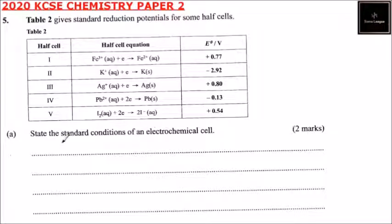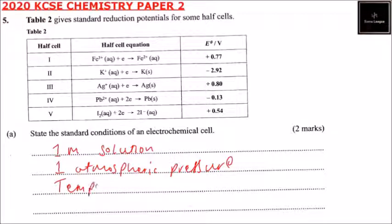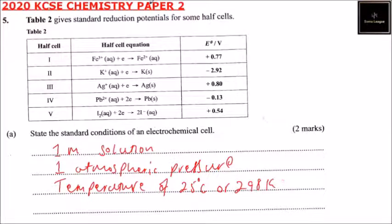Part A of the question: state the standard conditions of an electrochemical cell. The conditions are: one, one molar solution; two, one atmospheric pressure; and three, a temperature of 25 degrees Celsius or 298 Kelvin. Those are the standard conditions of an electrochemical cell.